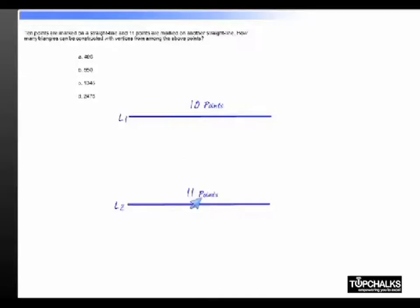We need to construct triangles using these points. To construct triangles, you must pick two points from one line and one point from the other, or one point from this line and two from L2.